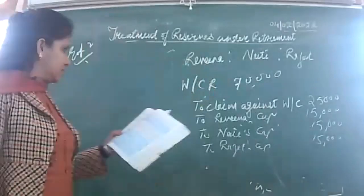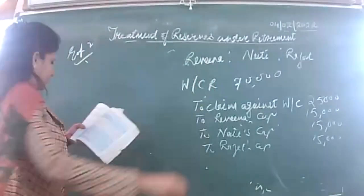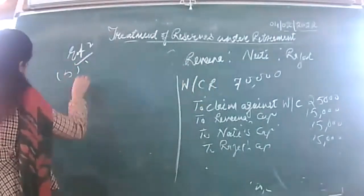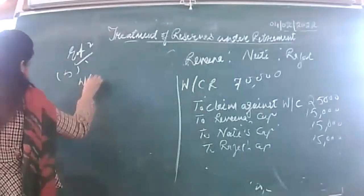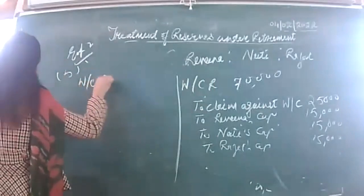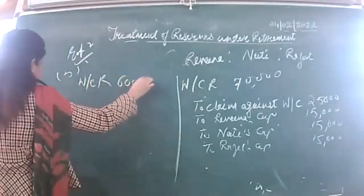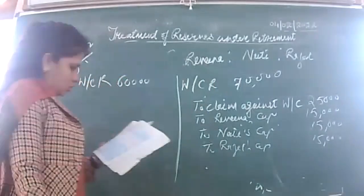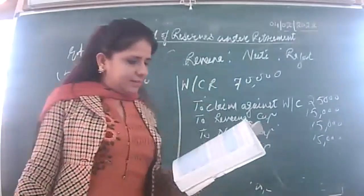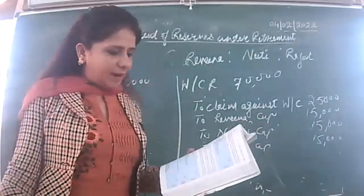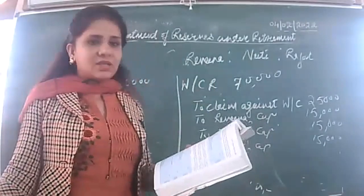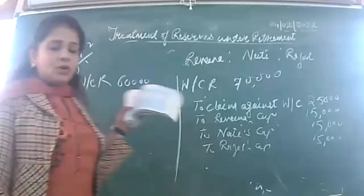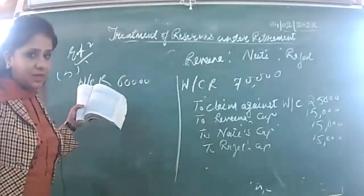Part B: workmen compensation reserve is 60,000. Sajjan is retiring. Against this there is no claim at all. We have three partners: Rajat, Sajjan, and Kavita. The whole amount will be divided because there is no claim against it. Again, profit sharing ratio of the three partners is not given, so I will assume they are equal partners.